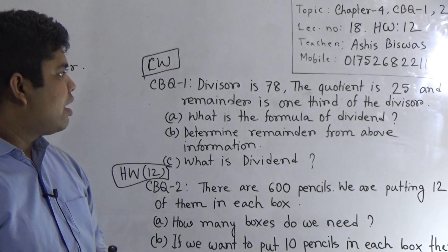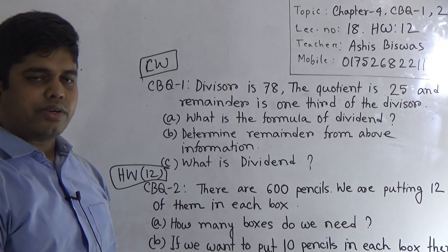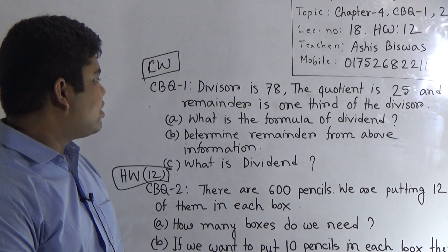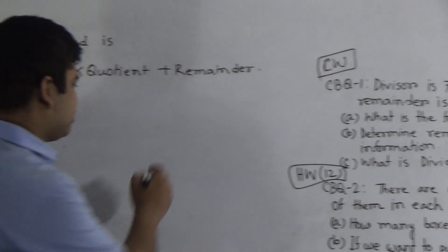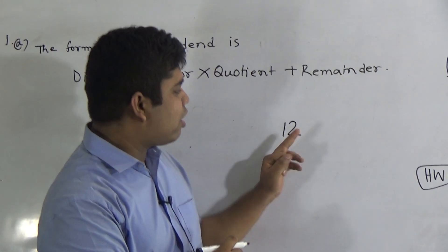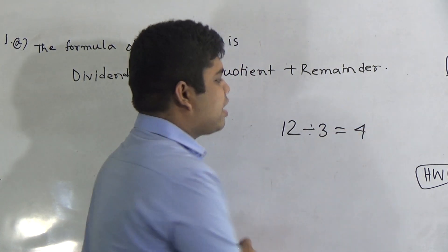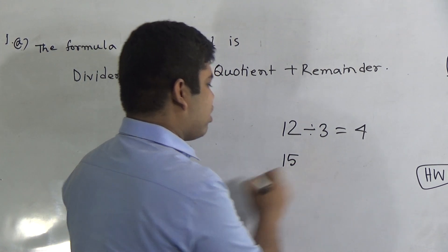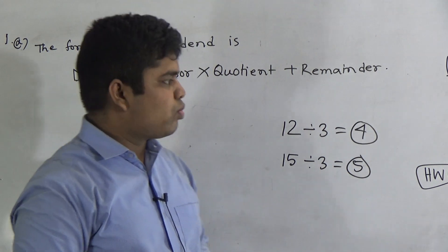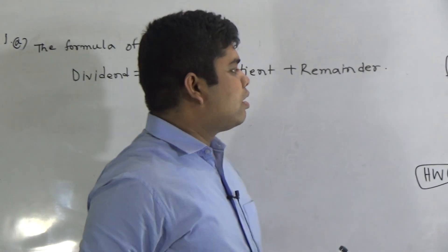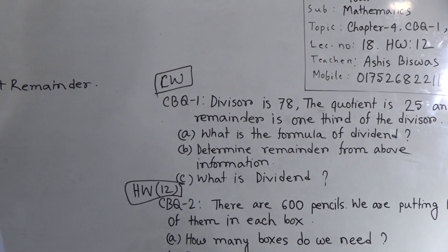Part B: Determine the remainder from the above information — that means from the stem we shall find out the remainder. The information is: divisor is 78, quotient is 25, and remainder is one third of the divisor. Dear student, remainder is one third of the divisor. For example, one third of 12 is what? If we divide 12 by 3 we get 4, because 3 fours are 12. Similarly, one third of 15 means we divide 15 by 3 and get 5. In the same way, we shall find out the remainder. Since the remainder is one third of the divisor, the divisor is needed.